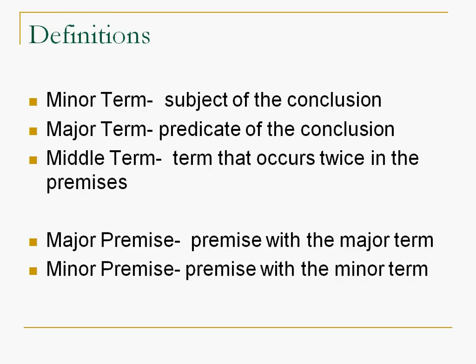Now, of course, the major premise is the premise with the major term. That is, the premise with the predicate of the conclusion. The minor premise is the premise with the minor term, or the premise with the subject of the conclusion.